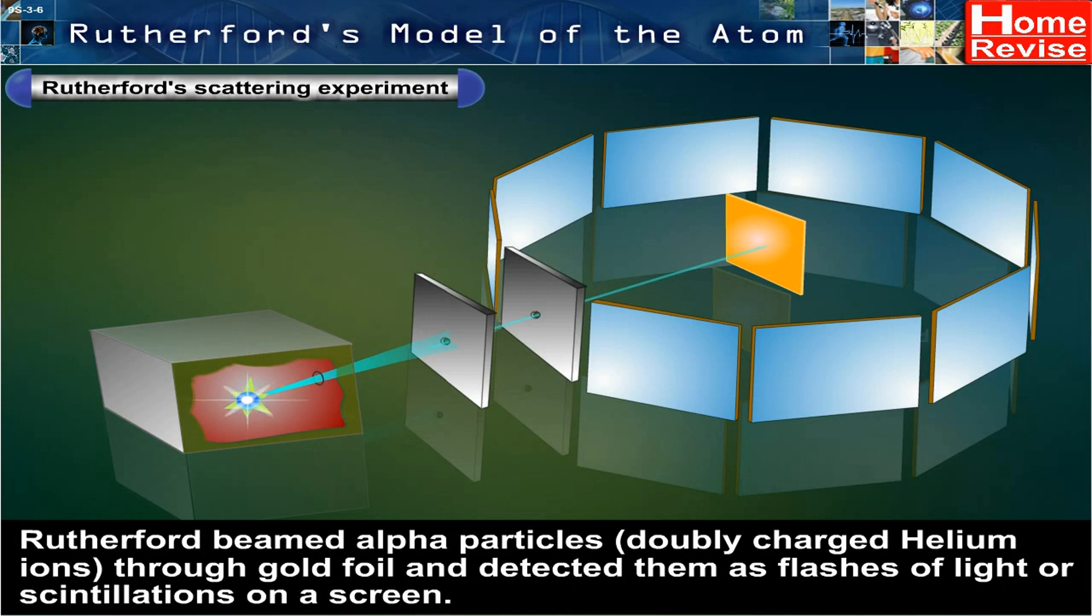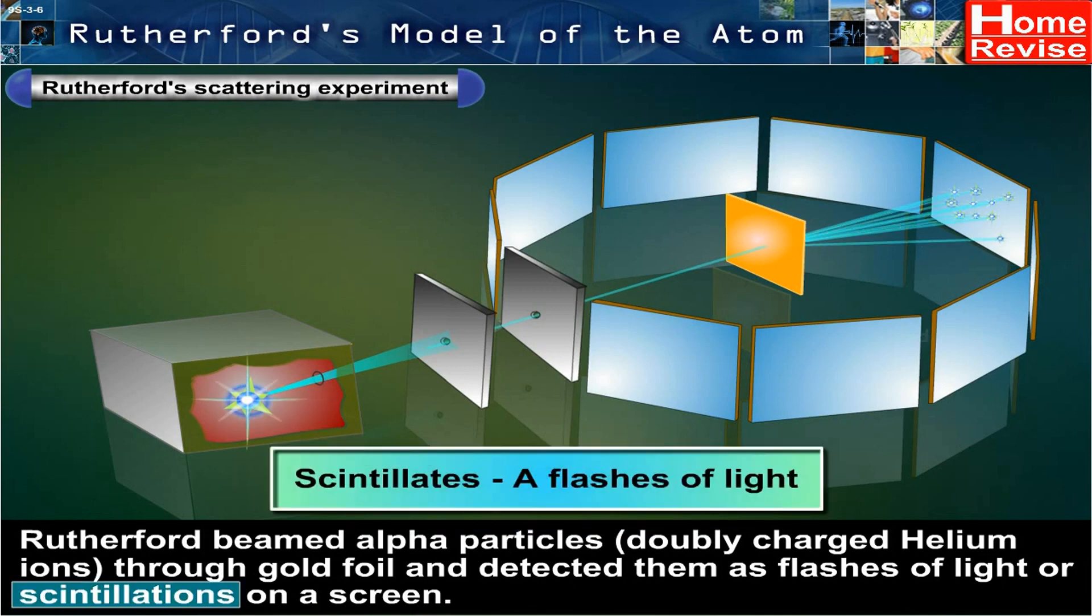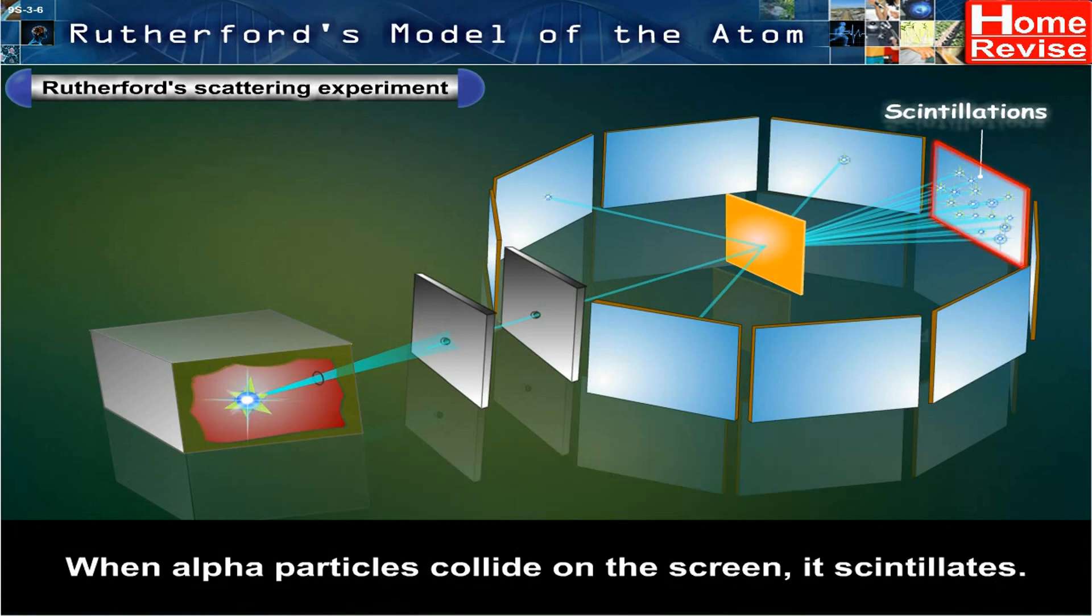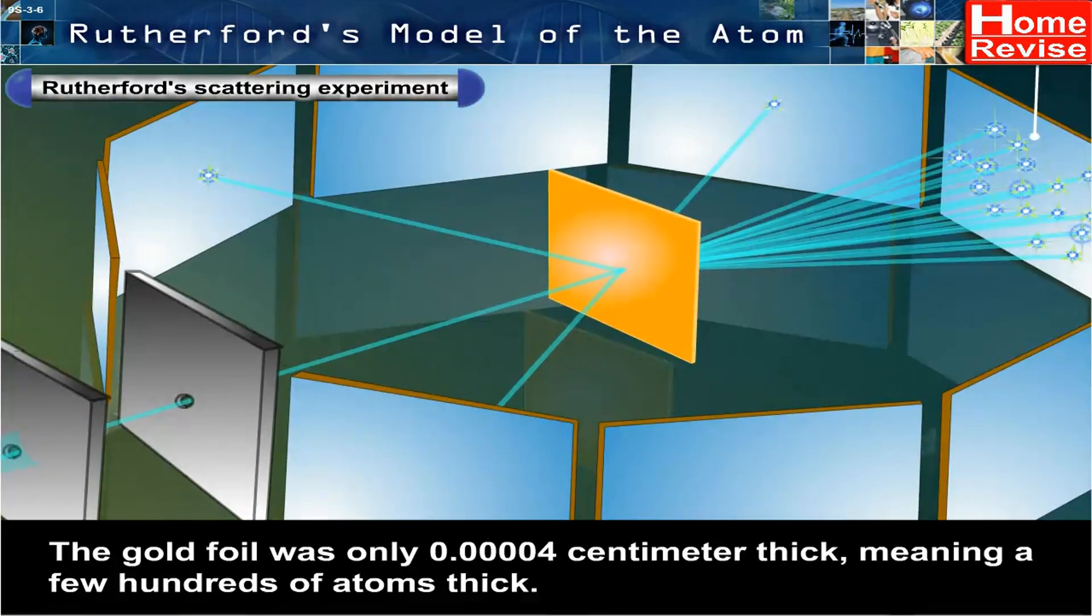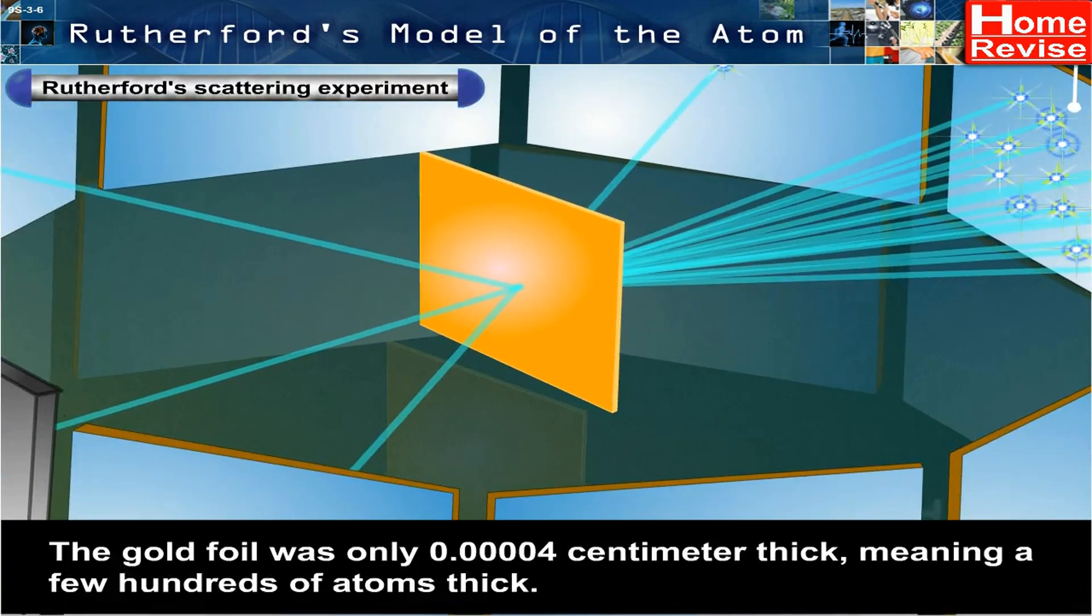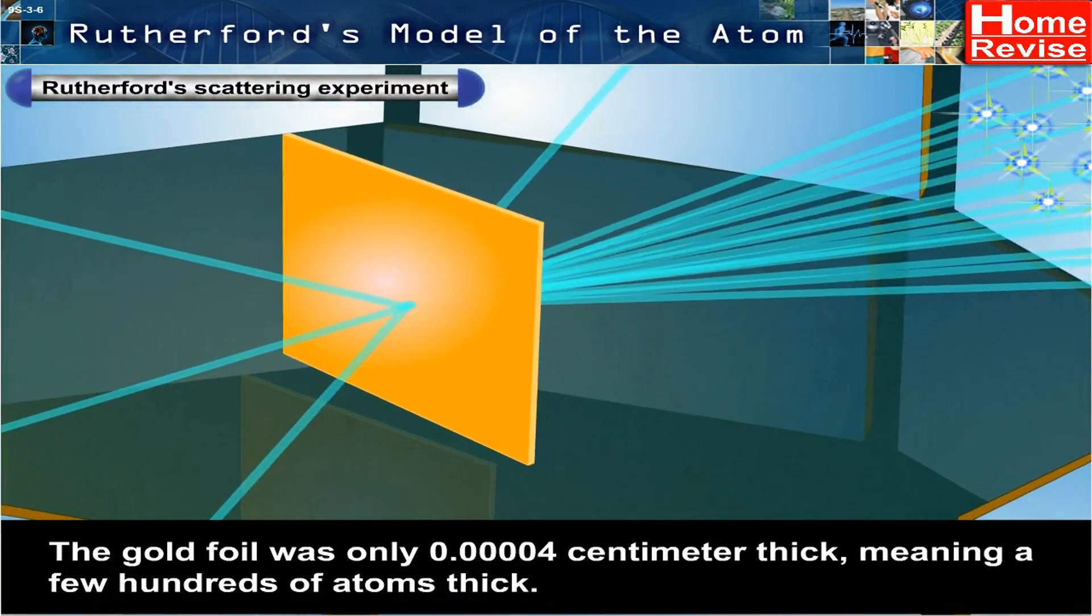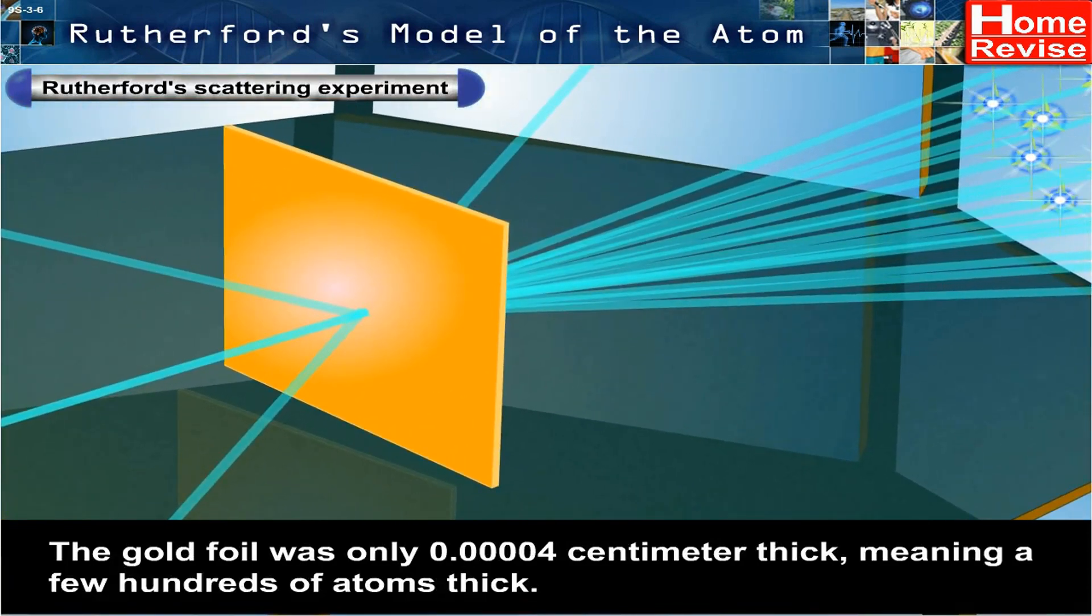He detected them as flashes of light, or scintillations, on a screen. When alpha particles collide on the screen, it scintillates. The gold foil was only 0.00004 cm thick, meaning a few hundreds of atoms thick.